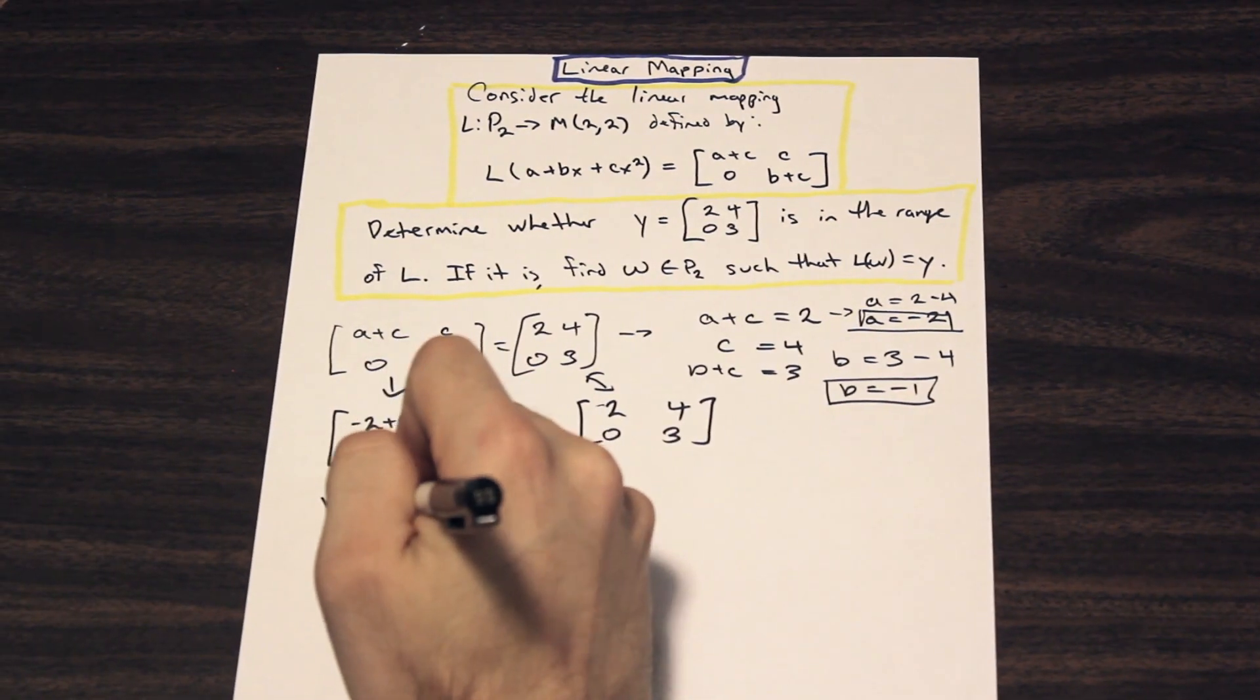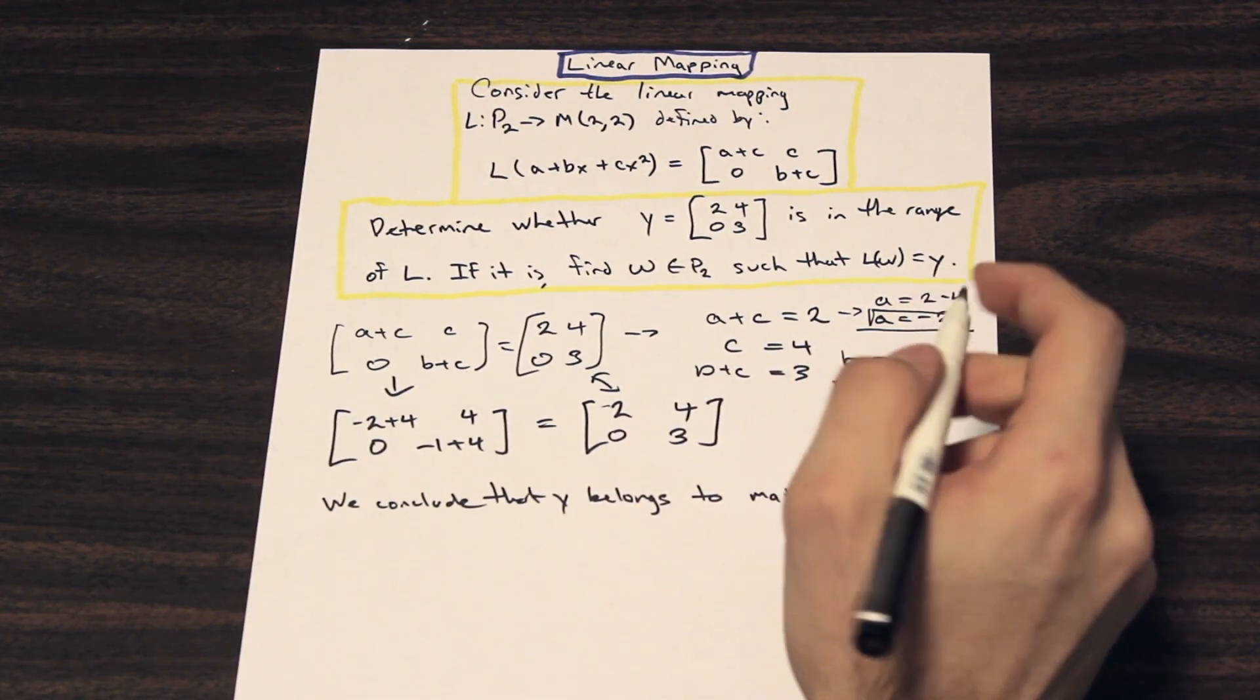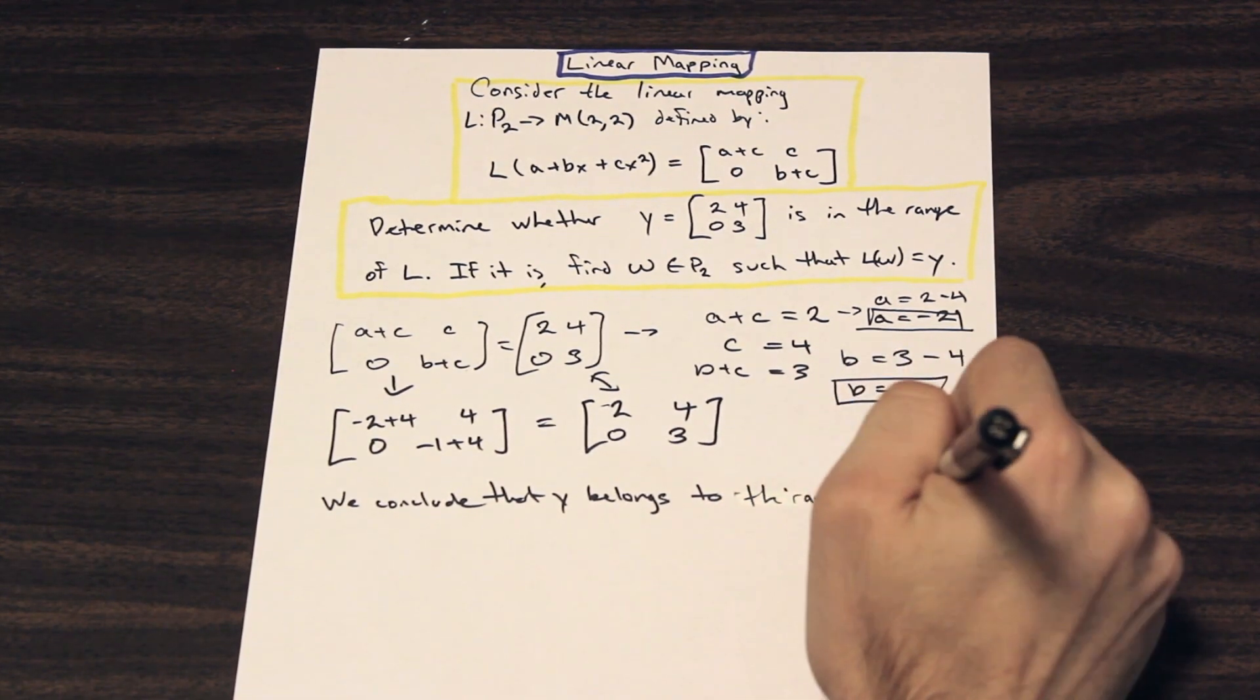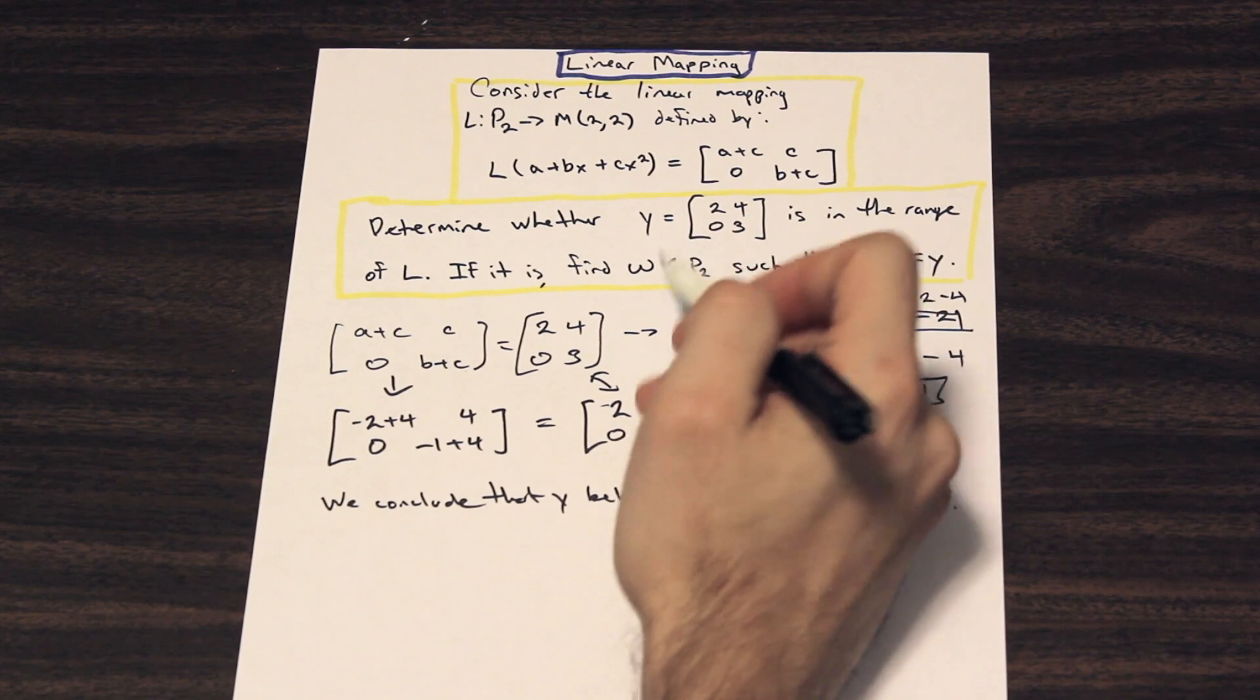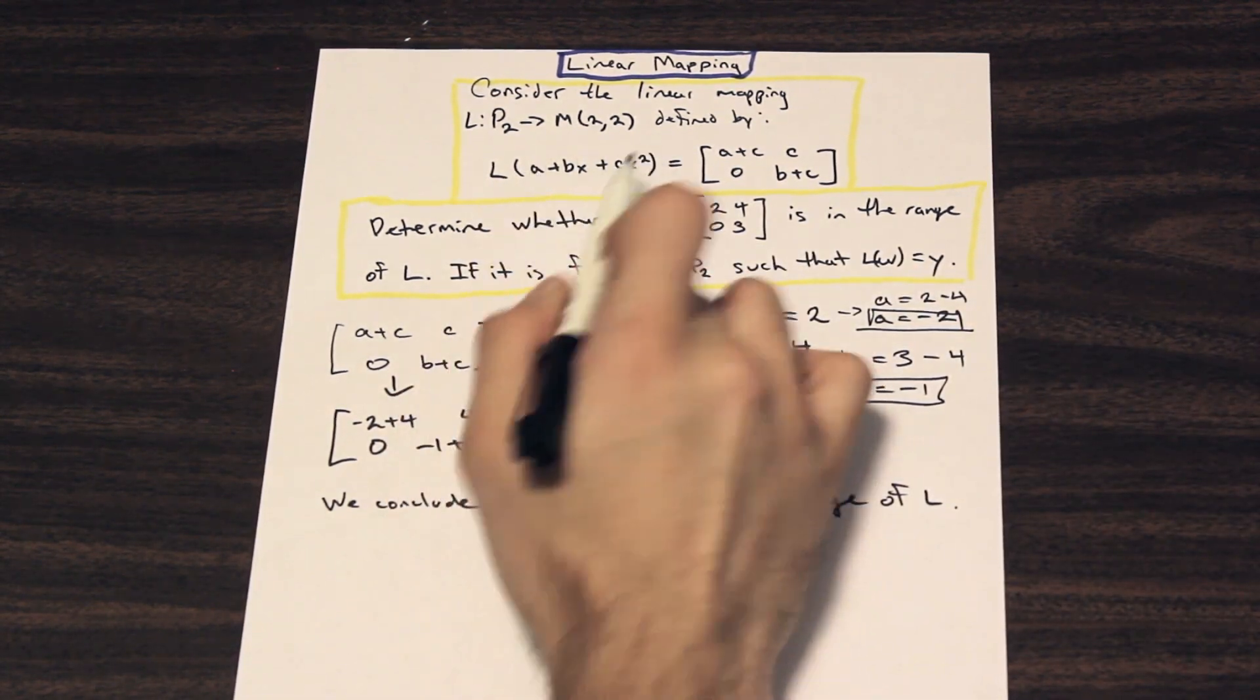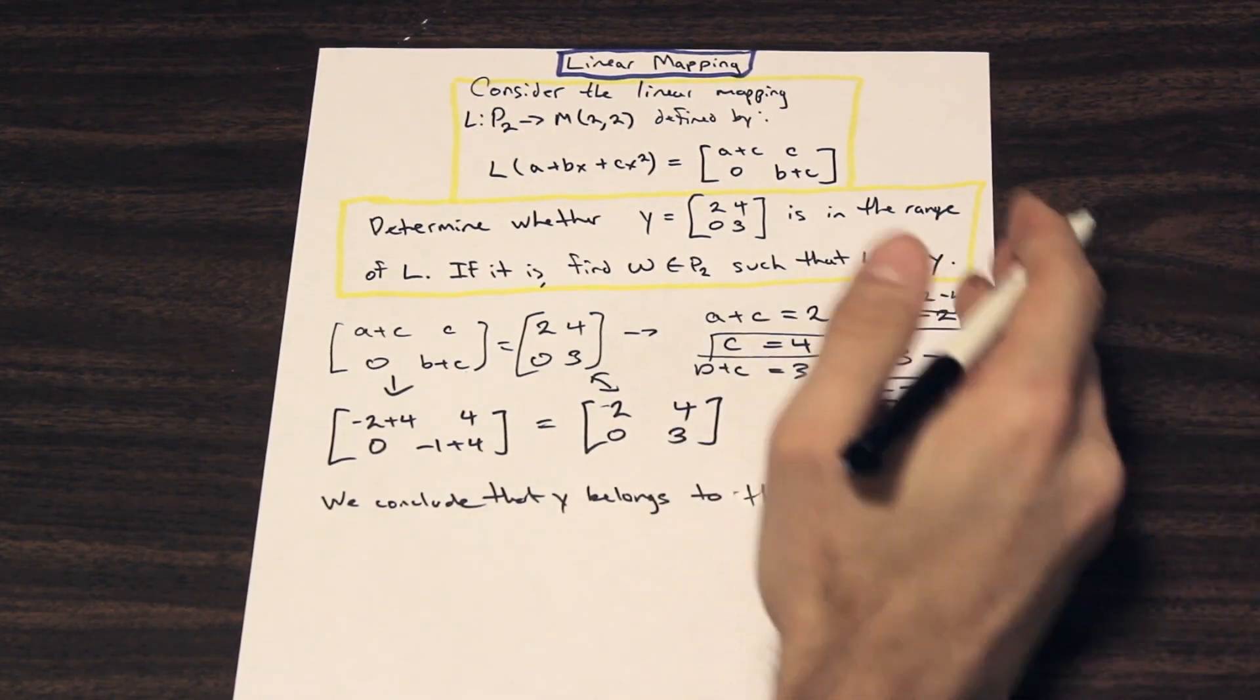And what is the second part of the question? So if it is in the range of L, we need to find that W belongs to P2 such that L(W) equals Y. So all we need to do in this case, see this function here, L of a function, right? So this is our W here, right? Because L(W) equals Y. This W here, all we need to do is take our coefficients from our linear equations here, this linear system of equations, and we just need to plug them in.